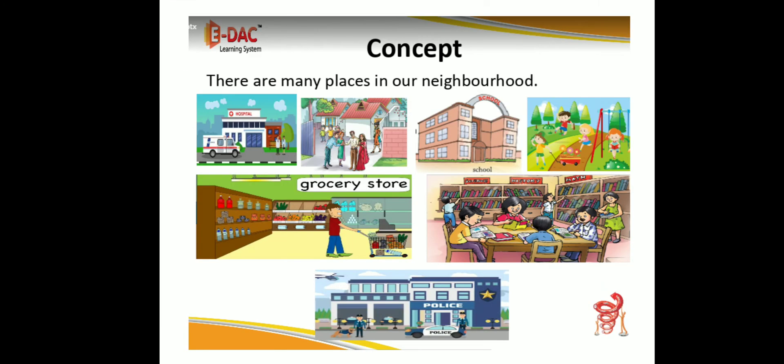Exploring the concept. In the previous session, we have learned that there are many places in our neighborhood. For example: hospital, houses, library, departmental store, police station, and grocery store.